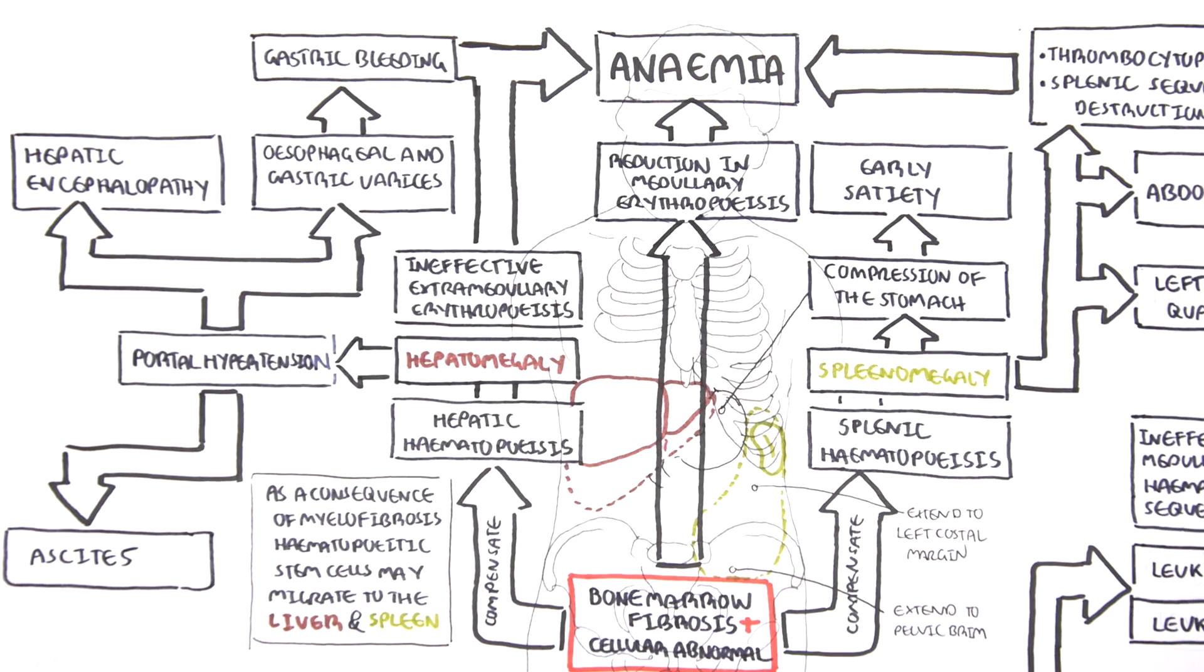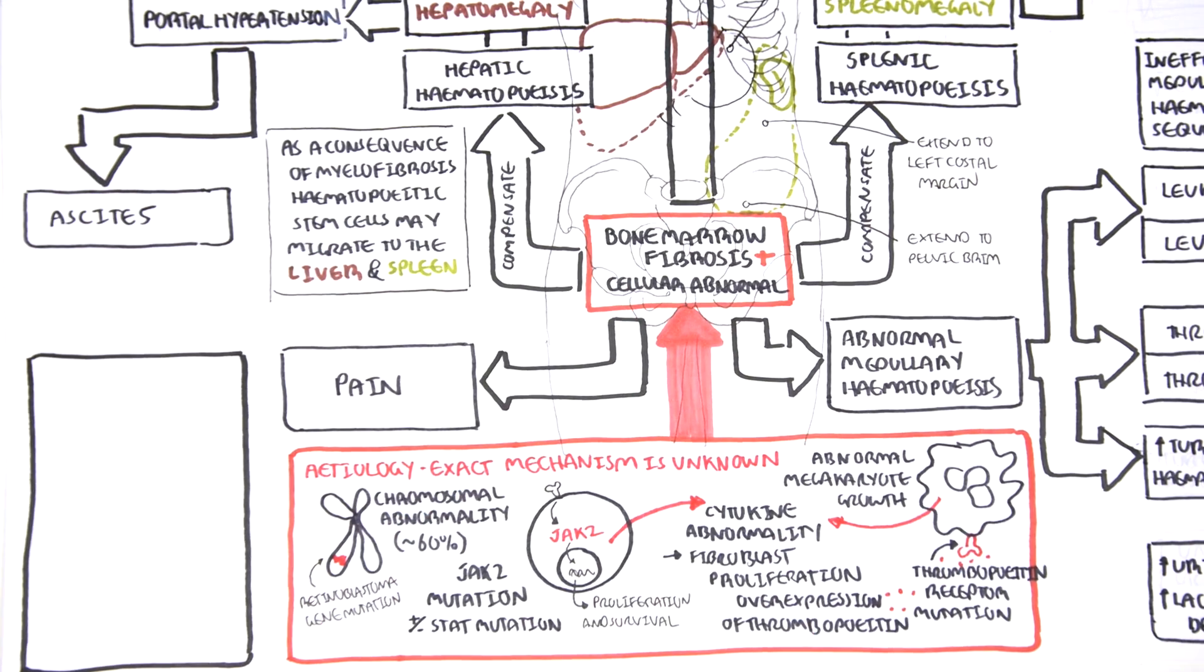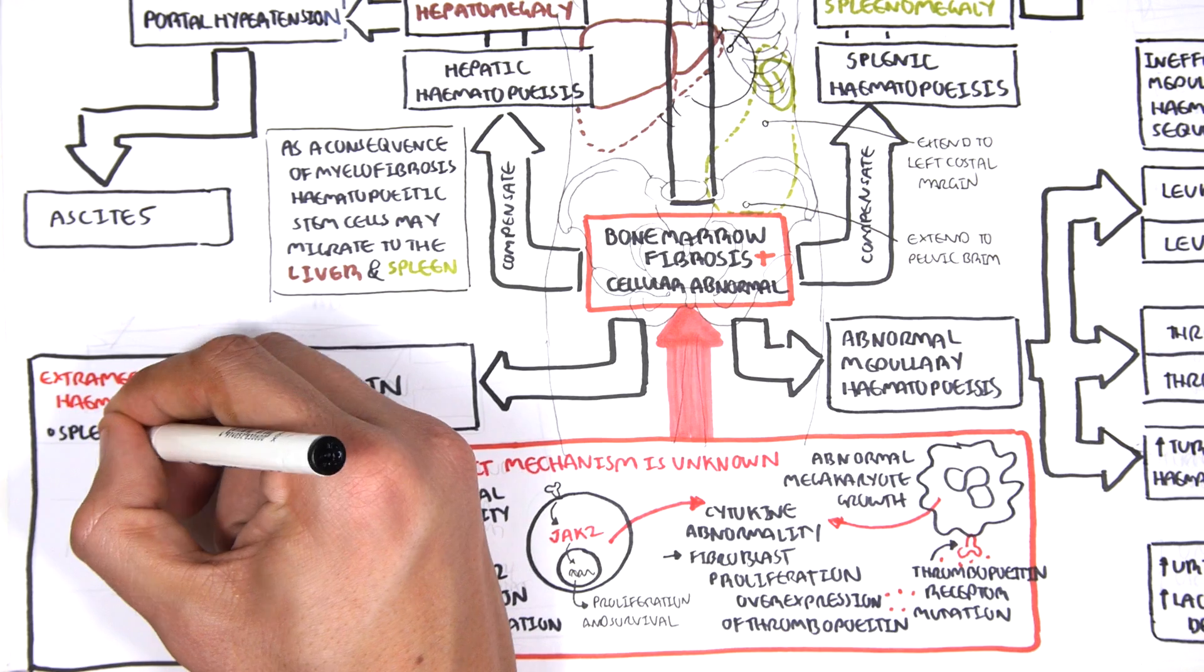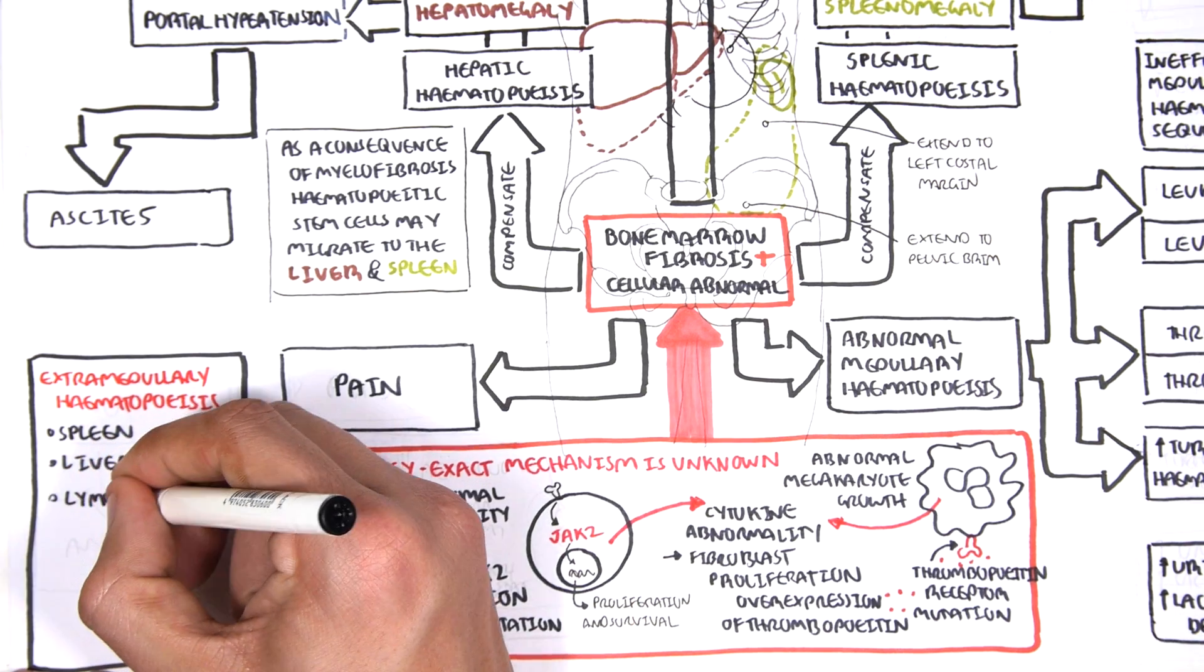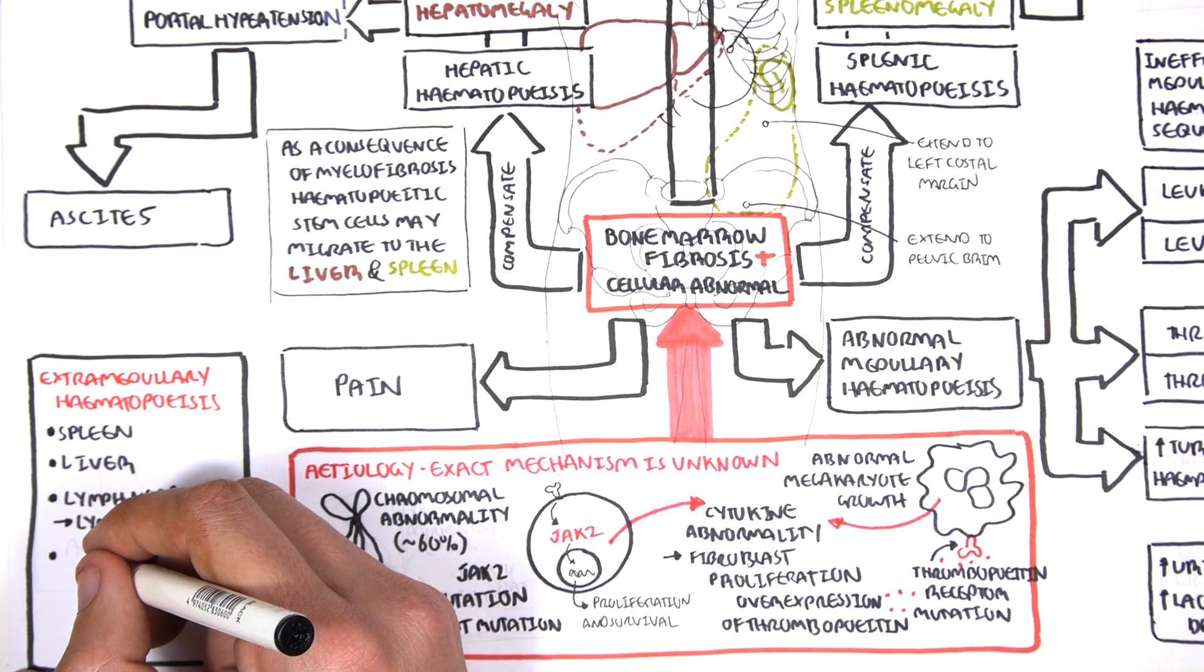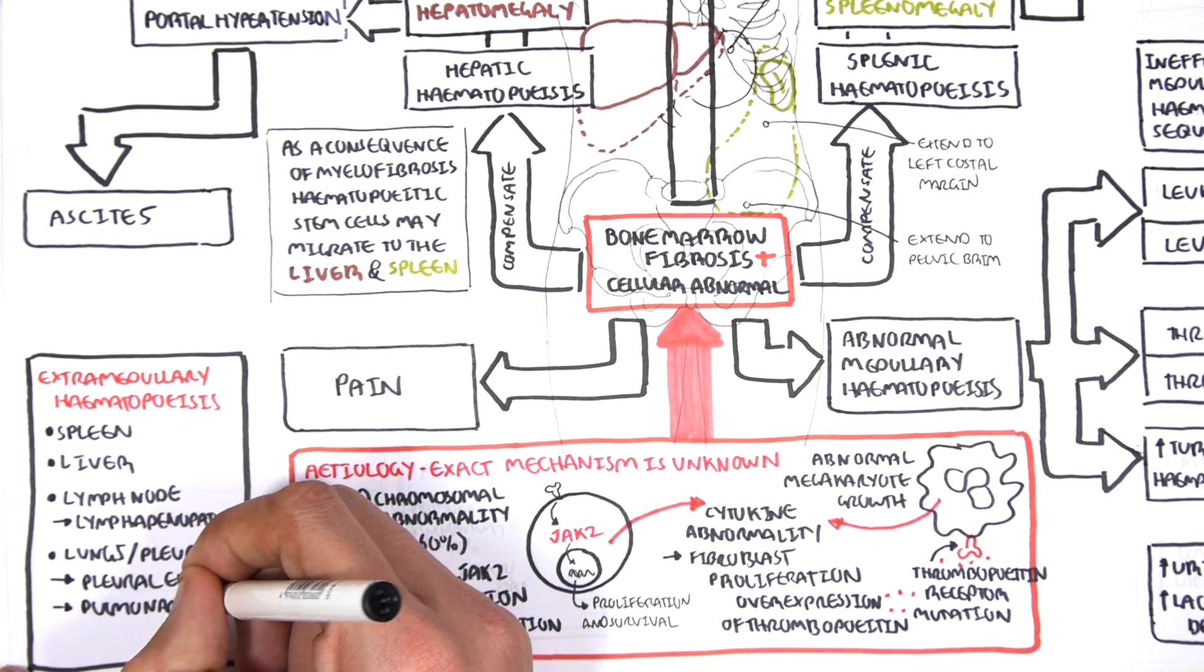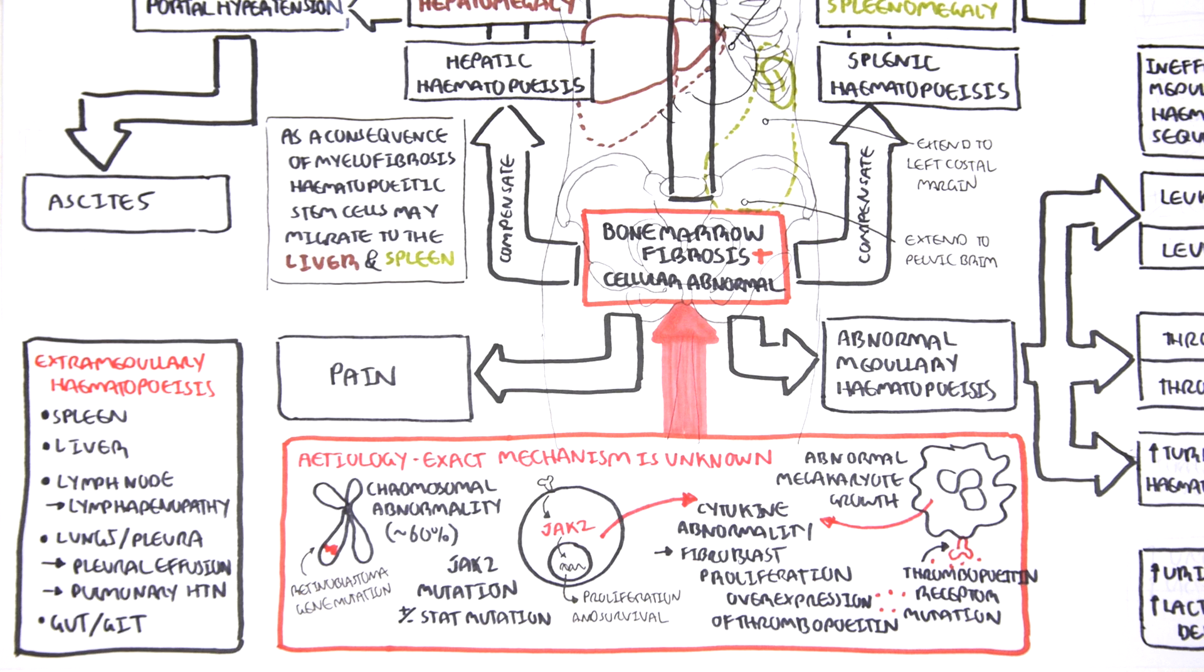When the bone marrow cannot perform hematopoiesis properly, extramedullary organs take over the job, as mentioned. Now, extramedullary hematopoiesis is very interesting. The spleen and the liver are usually responsible for the majority of extramedullary hematopoiesis when the bone marrow fails. But the lymph nodes can also do this, leading to lymphadenopathy. What's crazy is that the lungs and pleura can also perform hematopoiesis, which may lead to pleural effusion and pulmonary hypertension. Parts of the gastrointestinal tract and the genitourinary tract can also do this. What's mind-blowing is that the thalamus, the brain area, and other parts of the brain can also perform hematopoiesis if it needs to.